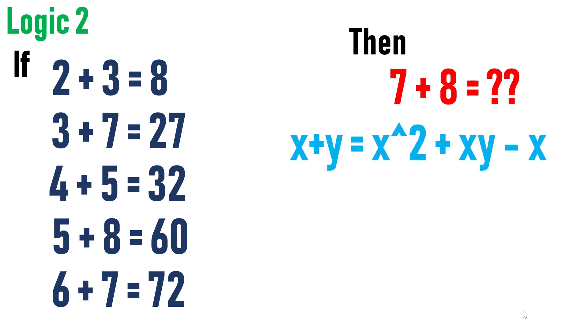The second logic is, if the two numbers are x and y, then the equation to solve the pattern is x plus y equals x square plus x y minus x. That is square of first number plus product of two numbers minus first number.